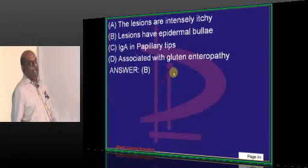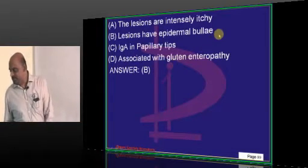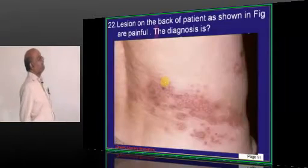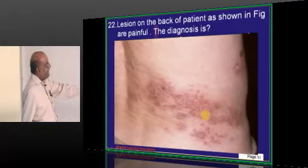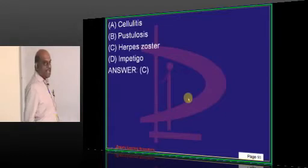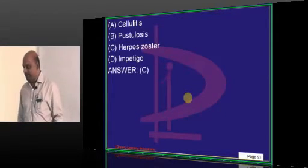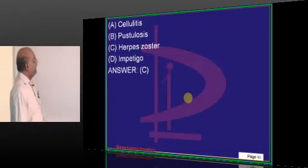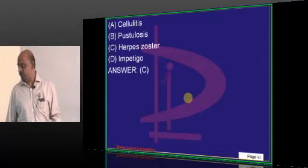There will be IgA deposits in the papillary tips, and gluten enteropathy is associated — the lesions are intensely itchy. It is on the back of the patient in a dermatomal pattern with painful lesions — that is classical herpes zoster, which is the recurrence of chickenpox from childhood.